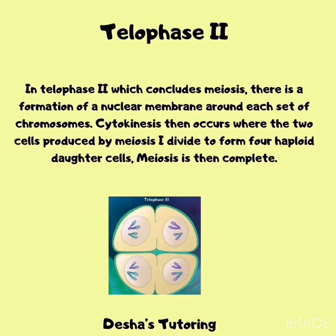Telophase 2 concludes meiosis. There is a formation of a nuclear membrane around each set of chromosomes. Cytokinesis then occurs, where the two cells produced by meiosis 1 divide to form four haploid daughter cells. Meiosis is then complete.